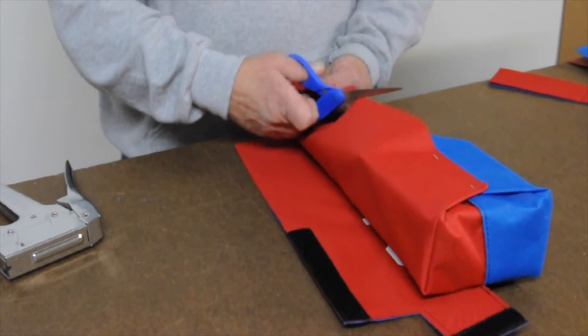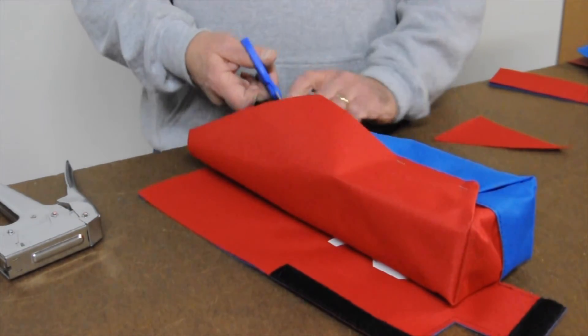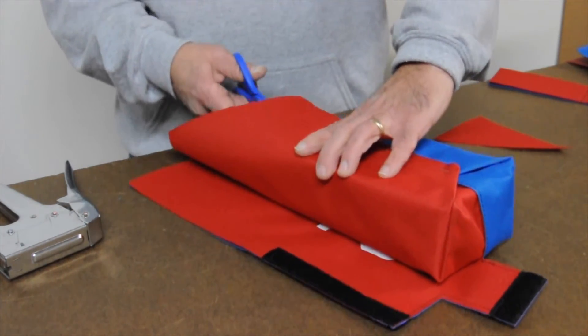To make the next steps a little easier, you can cut a v-shape out of the open end of the material. This will make the final folding process easier to complete.